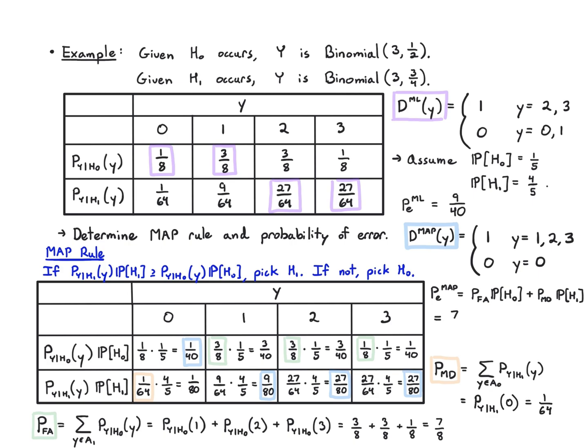The reason I'm getting a lower probability here is the weighted combination of these times 1/5 and 4/5 is 3/16. And 3/16 is actually lower than 9 over 40. So MAP outperforms ML.